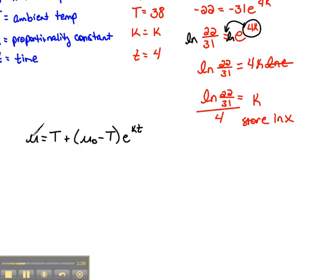Well, in this case we're trying to figure out what this temperature will be. We know that our room temperature here is 38 degrees. We also know that our initial temperature of the thermometer was 7 minus 38 for the ambient temperature, E to the, we stored our K value in X and we're trying to find out what happens after 6 minutes.